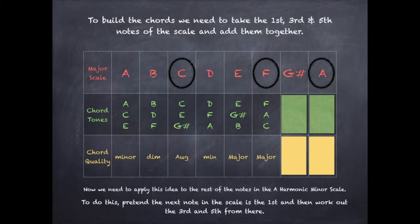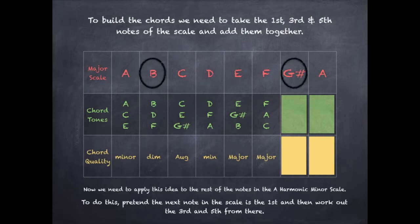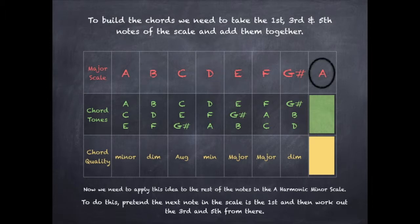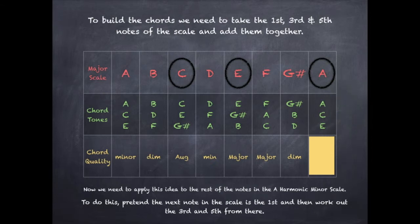And finally, to build a chord on the seventh scale degree, we take the seventh, second, and fourth notes of the scale — the G sharp, B, and D — and when we put these three notes together, we end up with a diminished chord. To build a chord on the eighth note of the scale, we take the eighth, or the first, the third, and the fifth note of the scale — the A, the C, and the E — and we create a minor chord, which is exactly the same as where we started.